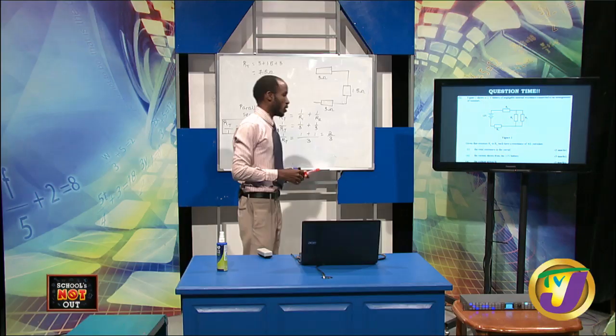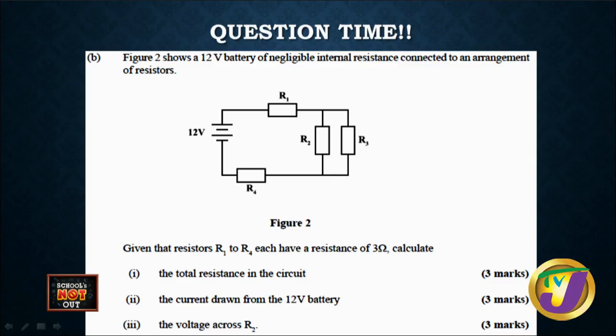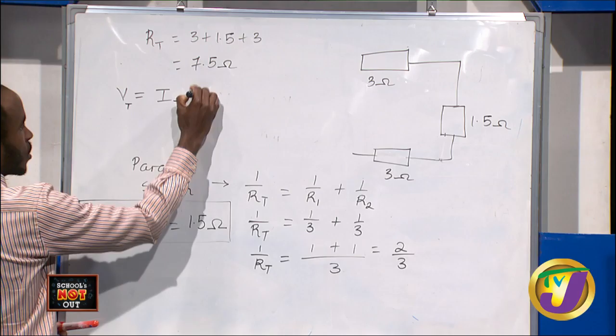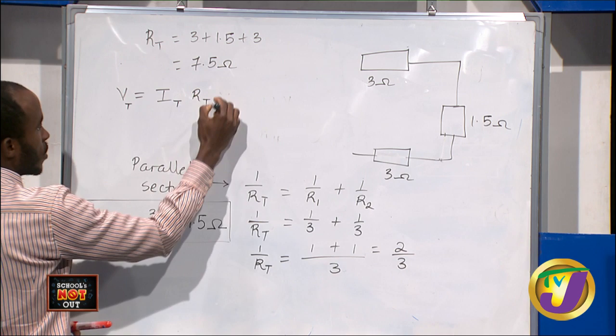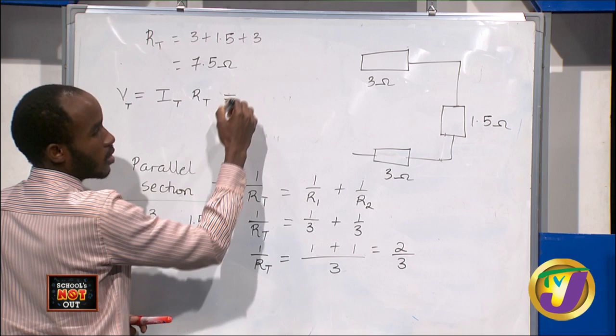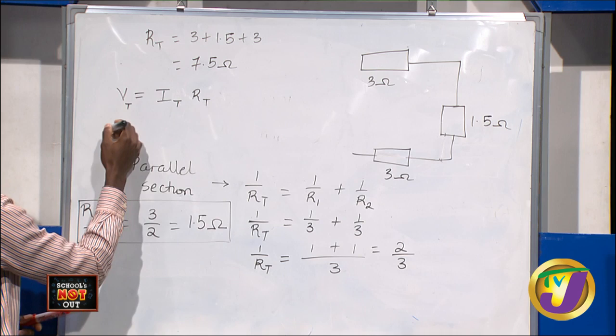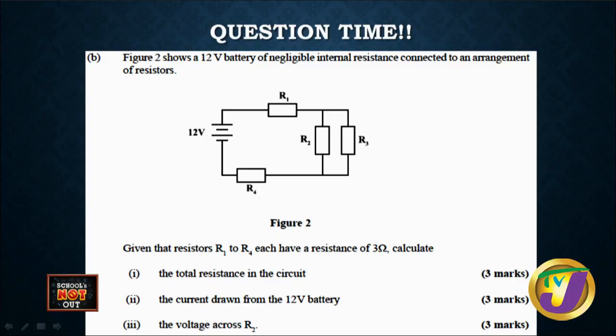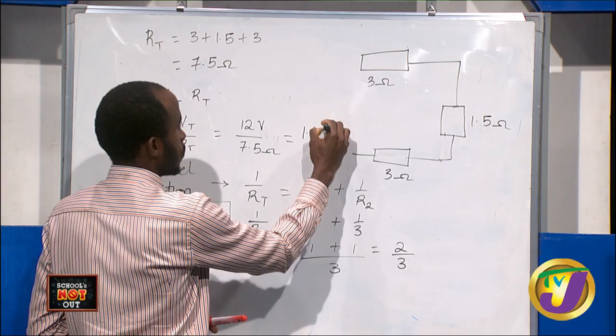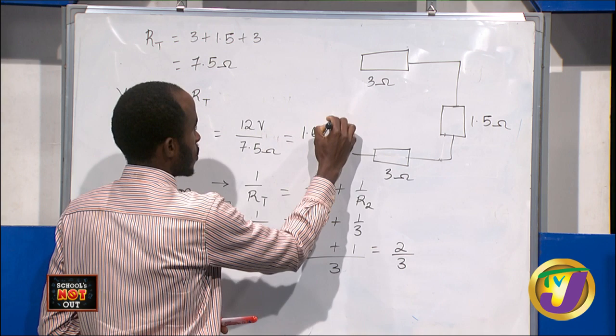To find the current drawn from the battery, apply Ohm's Law: V_total = I_total × R_total. We know voltage total is 12 volts and total resistance is 7.5 ohms. Therefore, current = V/R = 12/7.5 = 1.6 amperes. That's the current drawn from the 12-volt battery.